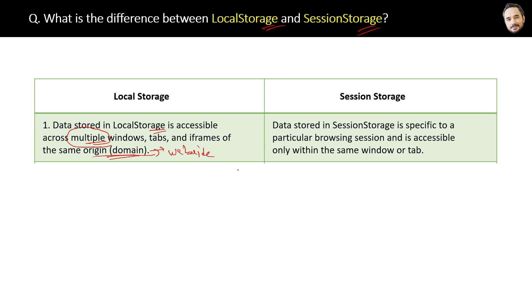For example, you can open Facebook and log in in one window, and if you open another window, you are not required to log in again, because your credentials or token are stored in local storage when you log in the first time. That will be shared across multiple tabs and windows — but only for the same website, not between different websites.